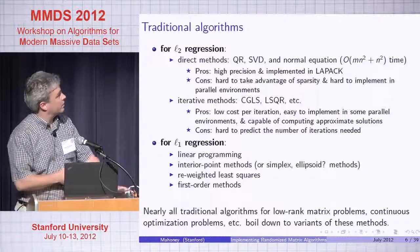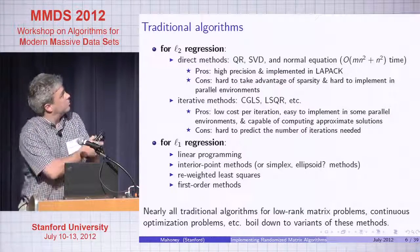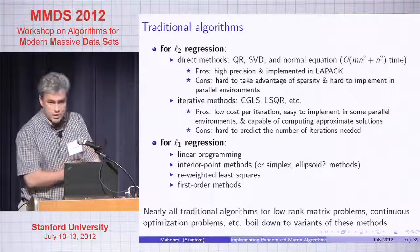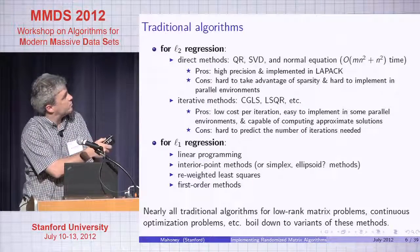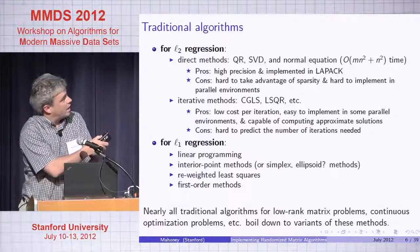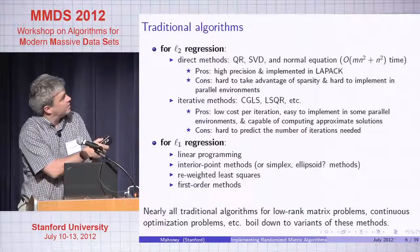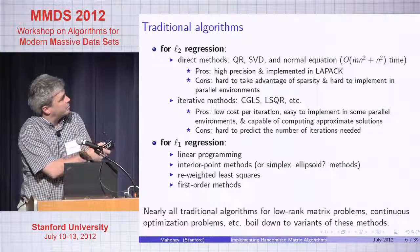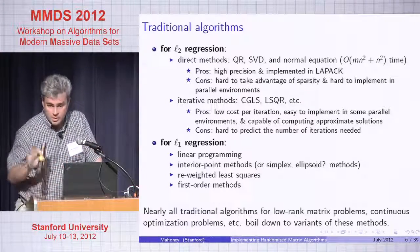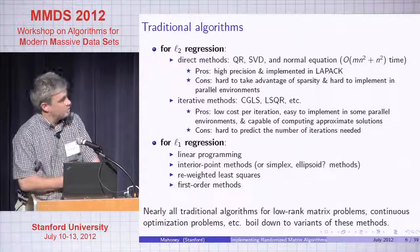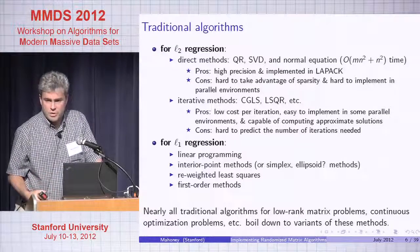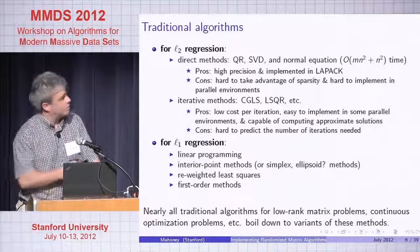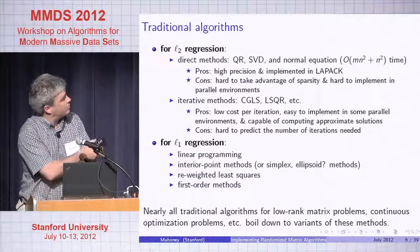For L2 regression — least squares approximation — there are direct methods: QR, SVD, normal equations, high precision implemented in LAPACK, but hard to exploit sparsity and hard to implement in parallel. You can also use iterative methods like conjugate gradient: low cost per iteration, typically easy to implement in parallel since you just need matrix-vector products, and you can compute approximate solutions at various precision levels.